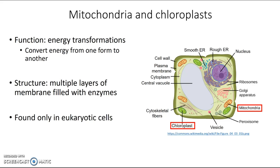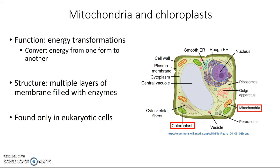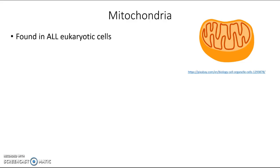Let's take a closer look at each one, starting with mitochondria. Mitochondria are generally depicted as an orangey, bean-shaped structure with some squiggles inside — that's the general structure. Mitochondria are found in all eukaryotic cells: animals, plants, fungi, and protists, depending on how you classify them — all of those cells would have mitochondria.